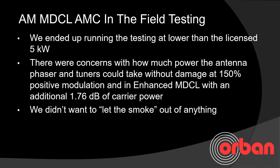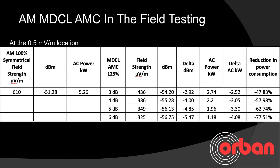We ended up running the testing at lower than the licensed 5 kilowatts. The reason was concern about how much power the antenna phaser and tuners could take without damage at 150 percent positive modulation with enhanced MDCL and an additional 1.76 dB of carrier power — we obviously didn't want to let the smoke out of anything. Note: there's a typo on the chart — it should read millivolts per meter, not microvolts per meter. The first column shows field strength at 100 percent symmetrical modulation: 610 mV/m, with AC power consumed by the transmitter at 5.26 kilowatts.